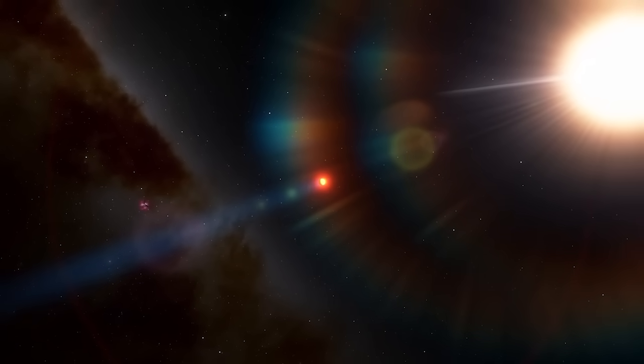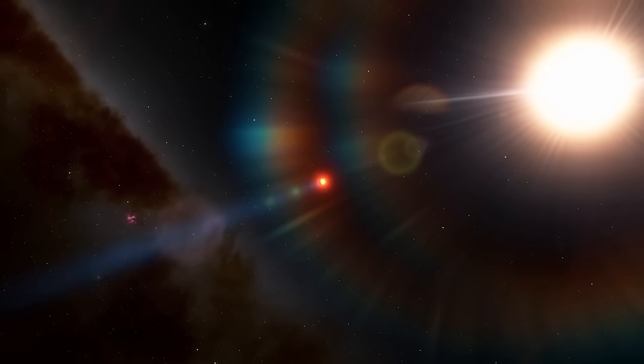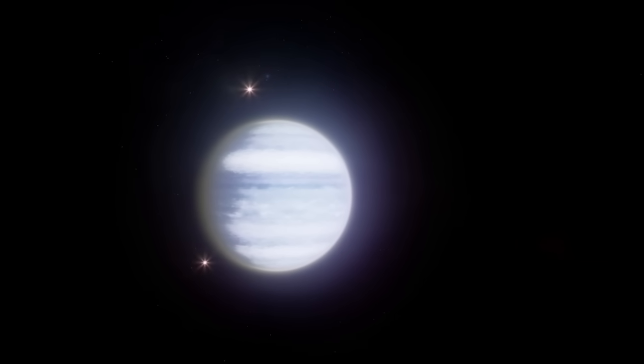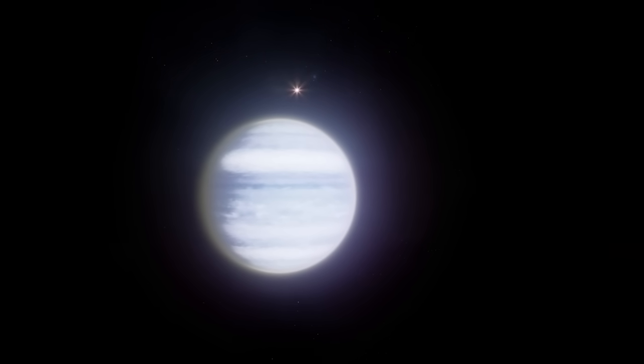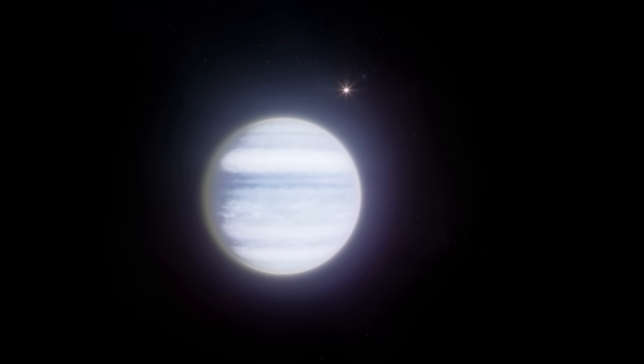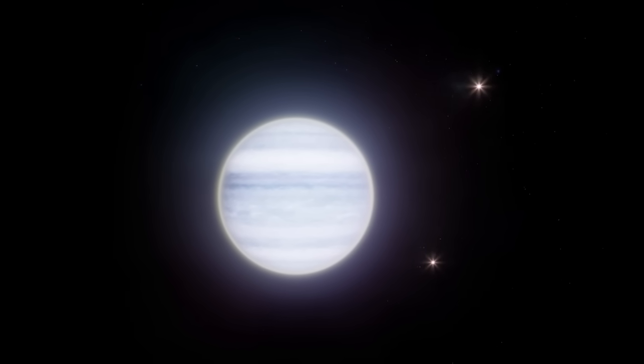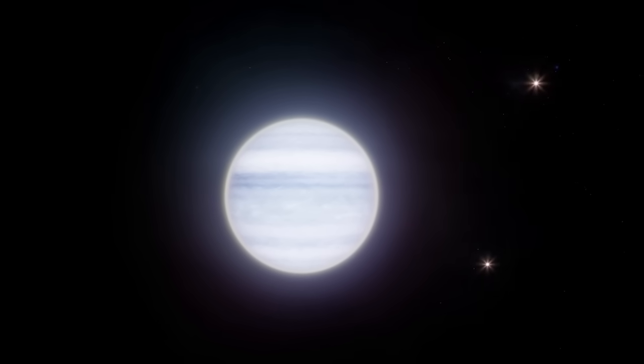When the exoplanet passes in front of its sun, the light of the star passes through its atmosphere, which allows scientists to study its spectrum, and thus its chemical composition. Carbon dioxide was thus identified, a first outside the solar system.